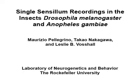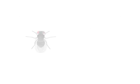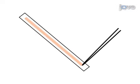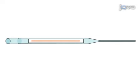This video demonstrates how to perform single sensillum recordings in Drosophila melanogaster and Anopheles gambiae. Prepared odorants are pipetted onto paper strips and are inserted into pasteur pipettes.